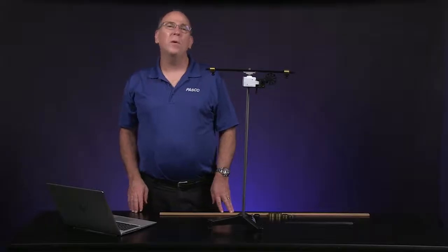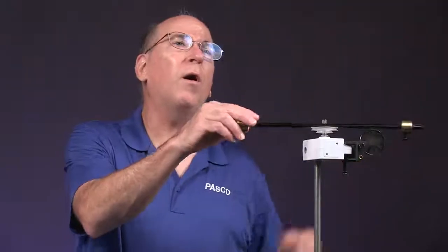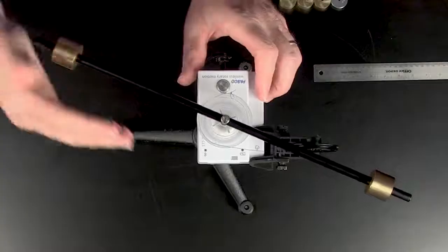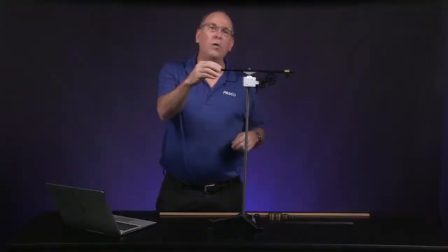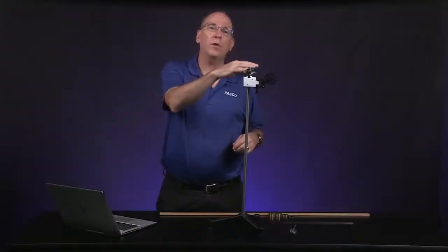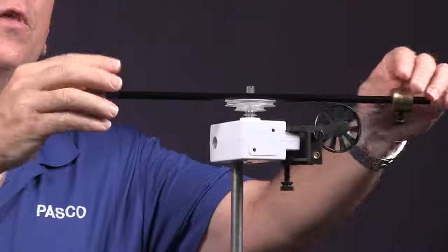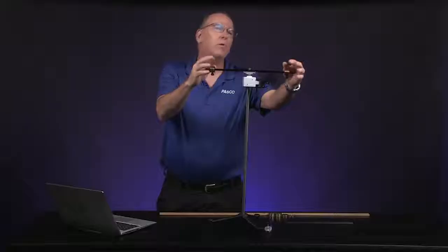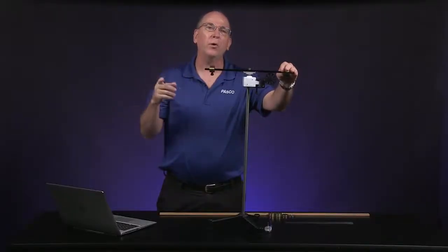Our system consists of this rotating arm attached to a rotary motion sensor. The sensor measures the angular velocity of the arm. We attach these masses to the arm to slow it down by increasing its rotational inertia. The farther out they are, the harder it is to rotate.